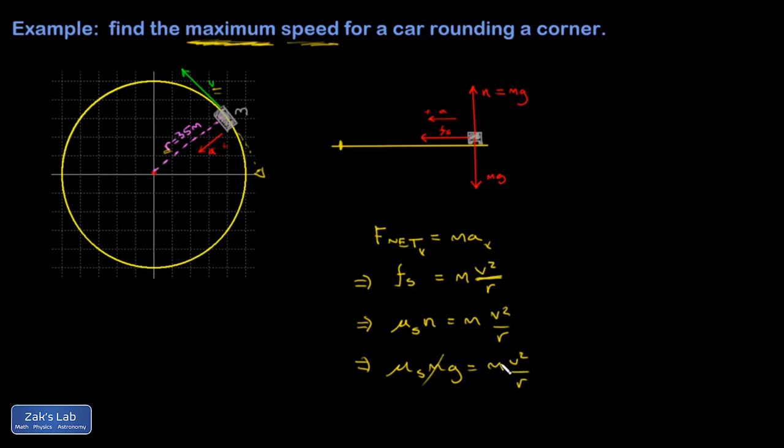And something interesting happens here. The mass cancels out. That means that every car that goes through this curve is going to have the same maximum speed. And that's really convenient if you're making signs to put on the side of the road telling people what the maximum safe speed is.